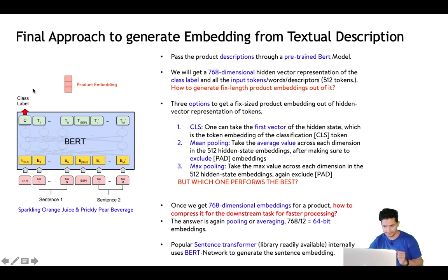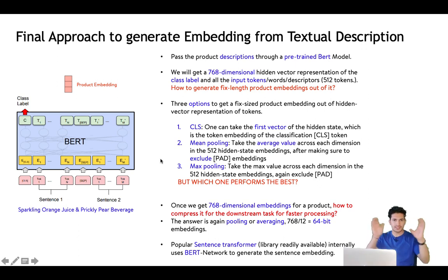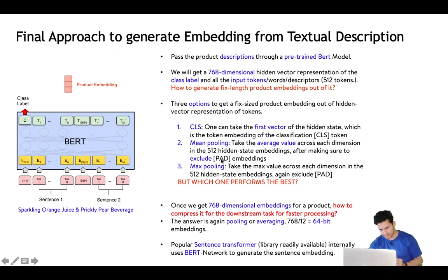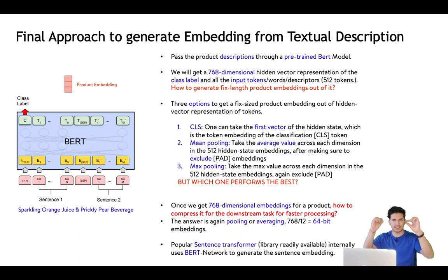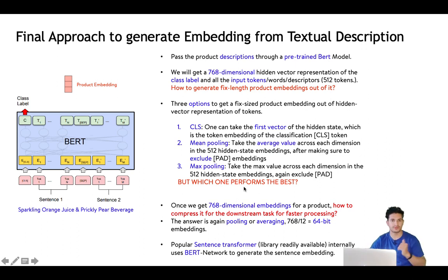Option one: simply use the class vector — the class embedding — which is 768 dimensions, as the entity's vector representation. Option two: take the vector representation of all words and average them to get a single vector — this is mean pooling. Option three: max pooling — take the vector representation of each word and for each dimension take the max across all word representations, giving a single vector.